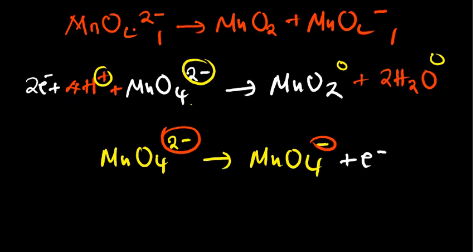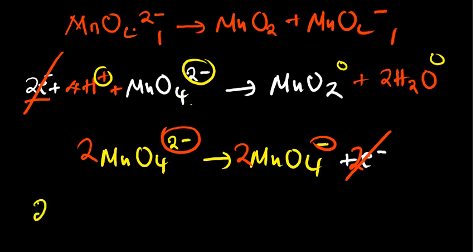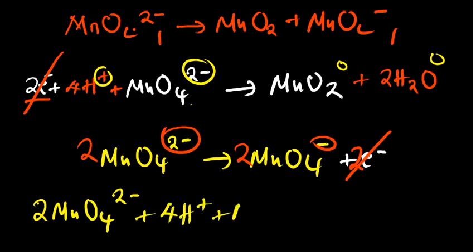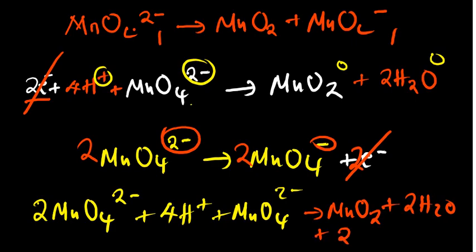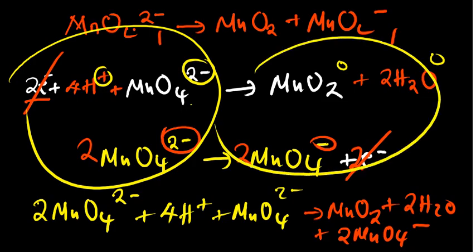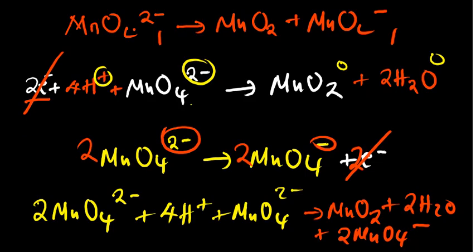The next step is to balance the number of electrons in both half-reactions. In the first half-reaction we have 2 electrons; in the second we have only 1 electron. So we multiply the second half-reaction by 2. Now the electrons cancel out, and we combine the remaining terms to form our final equation: 2MnO4 2- + 4H+ + MnO4 2- gives MnO2 + 2H2O + 2MnO4-.